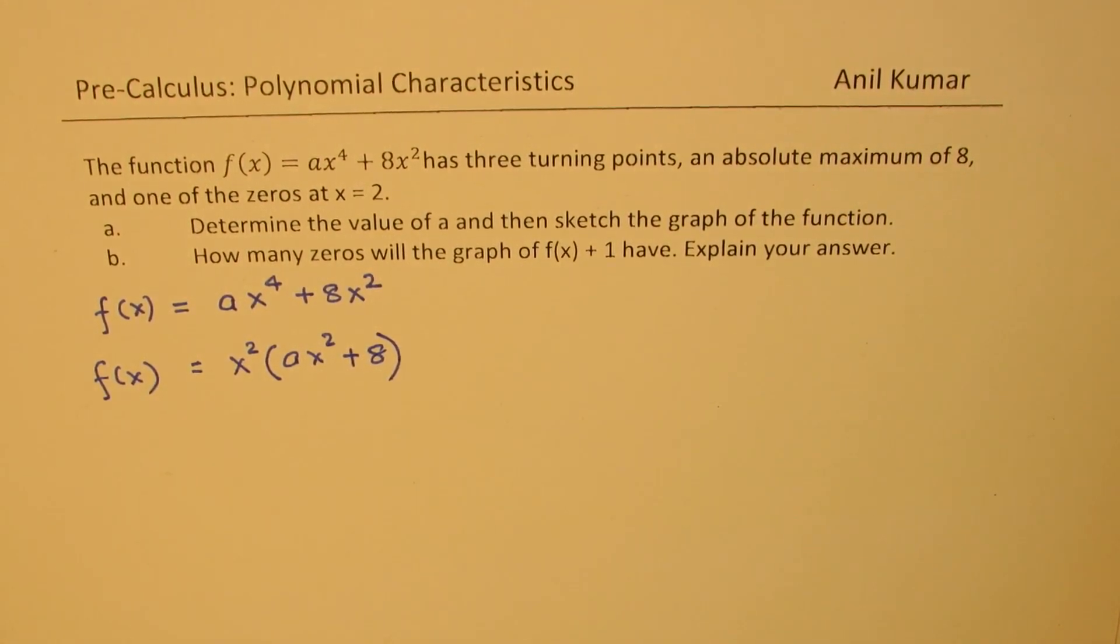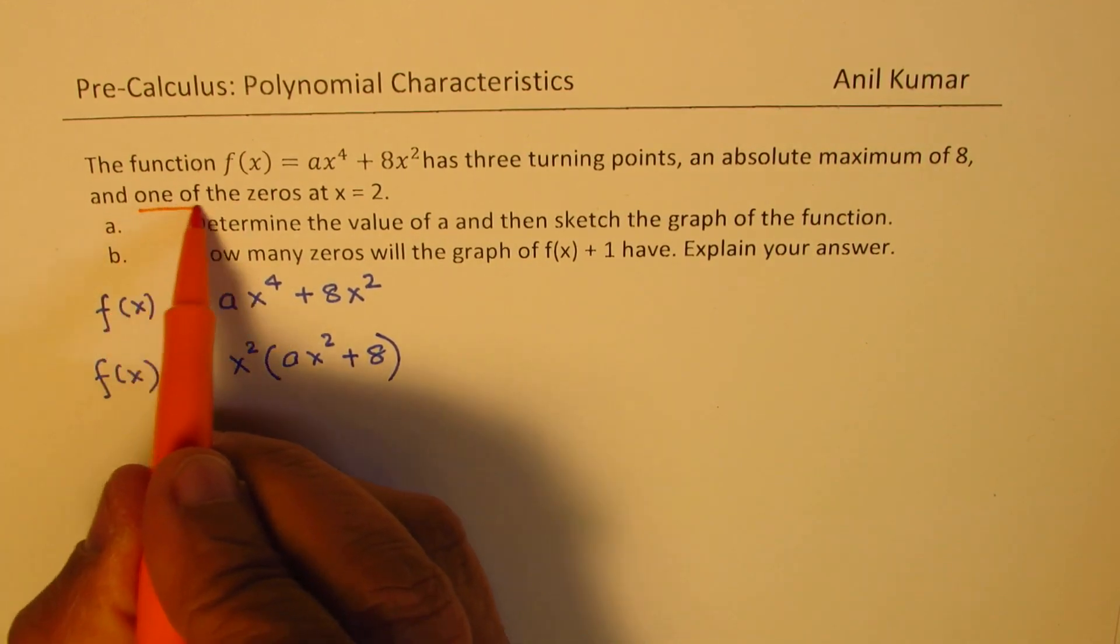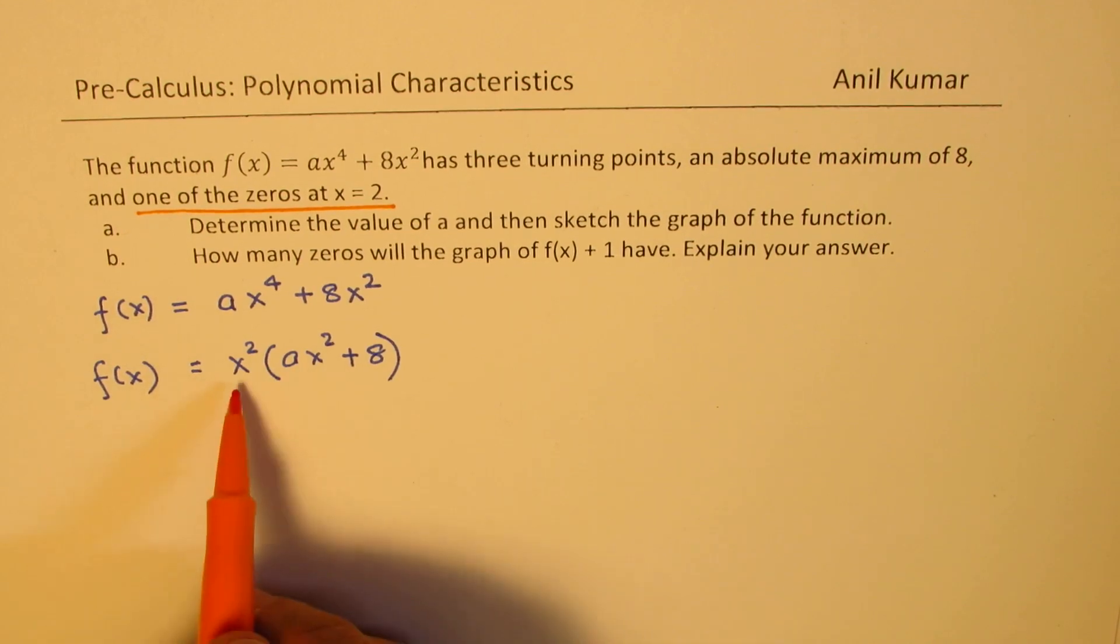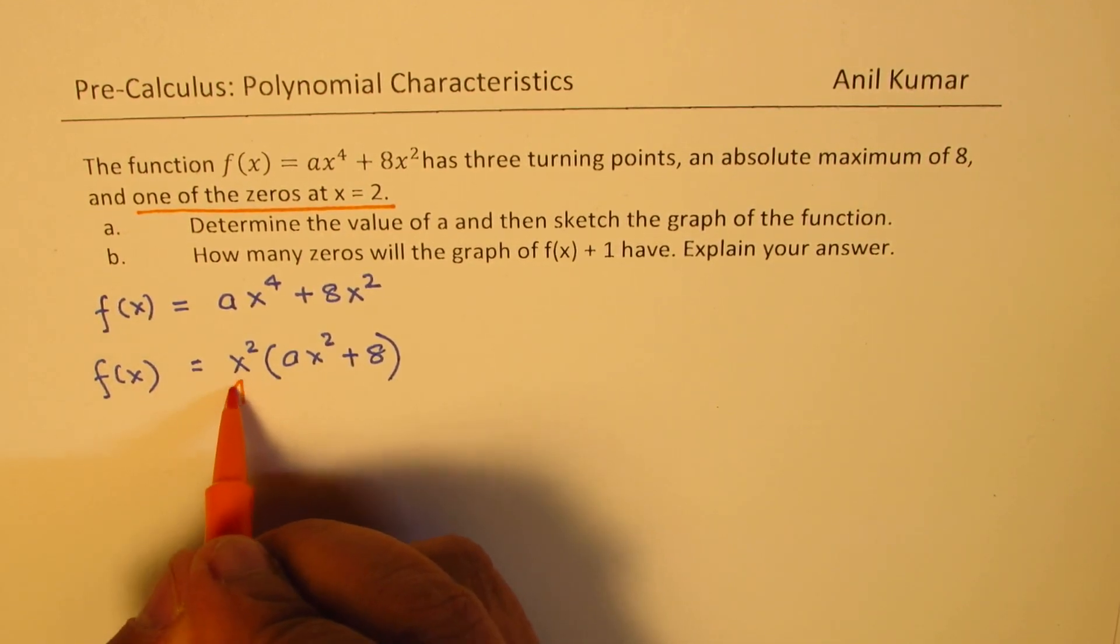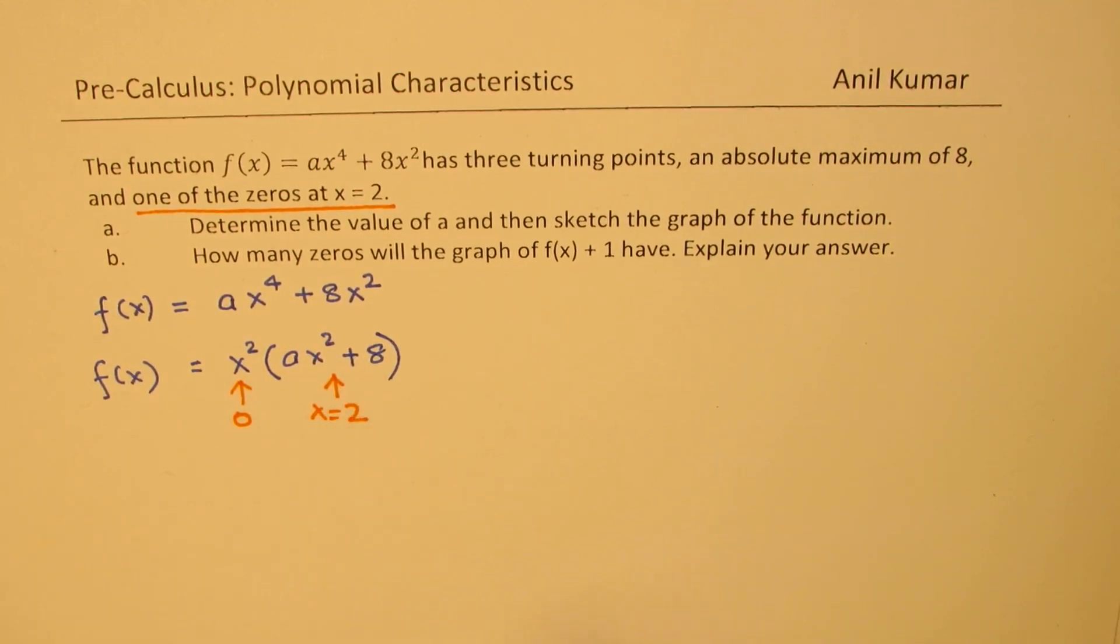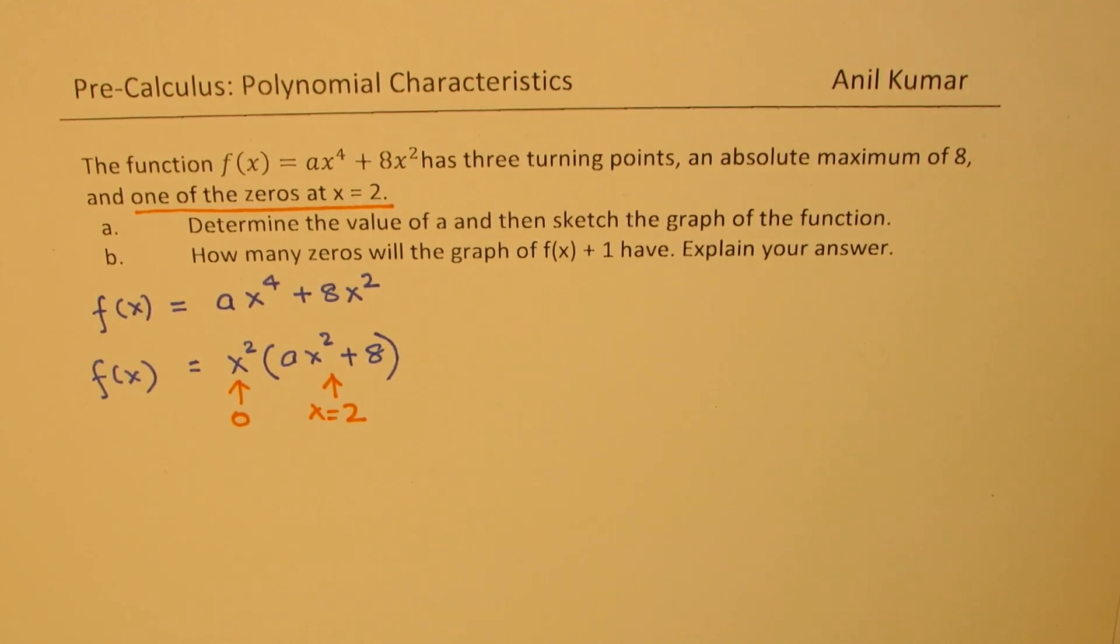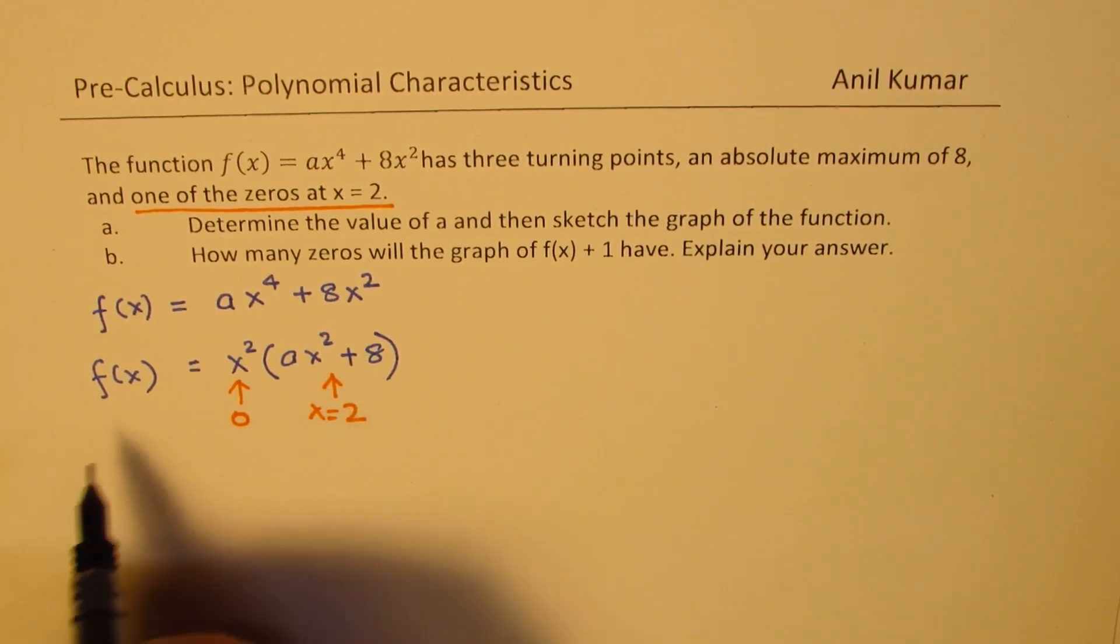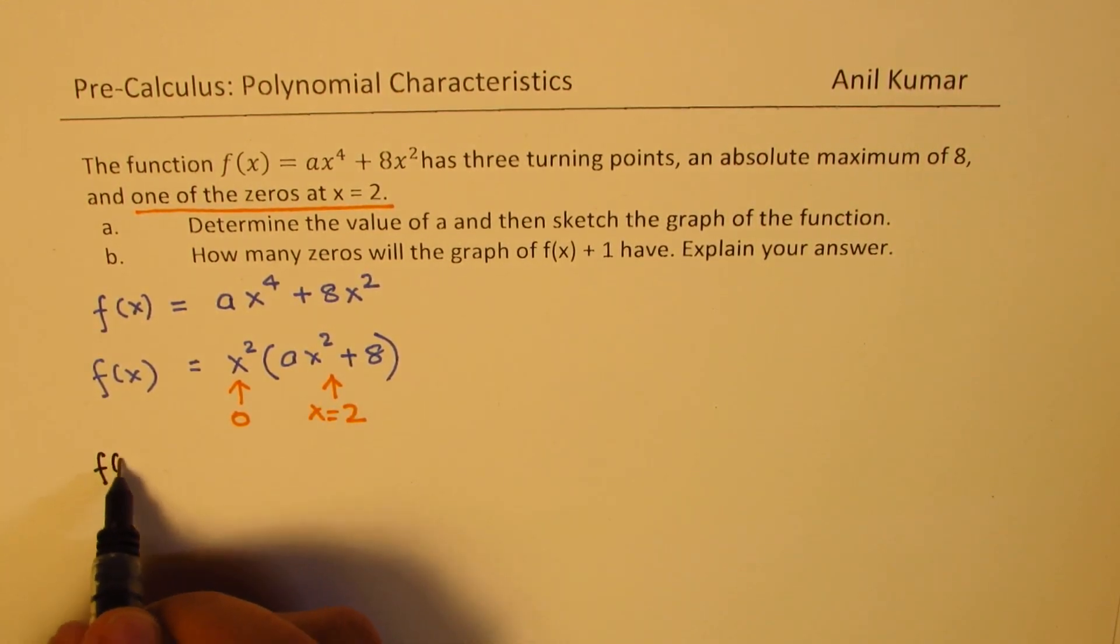Now we are given this statement that one of the zeros is at 2. This zero is at 0, right? This zero should be at x equals 2. That really means that if I substitute 2 for x in that case, we should get 0. We want zero at 2, that means f(2) is equal to 0.